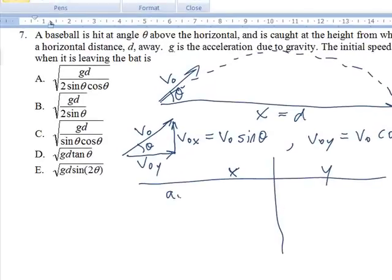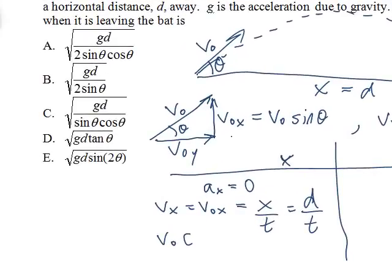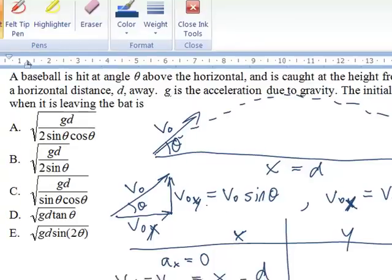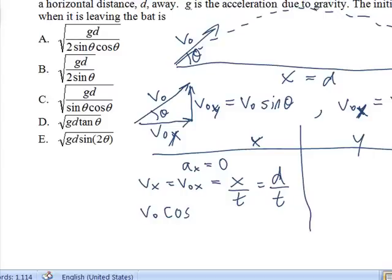So for x we know that the acceleration component is 0. So v sub x equals v sub 0x never changes. It's just equal to the x distance divided by the time, which in this case is d divided by the time. So we can say that v sub 0 times cos theta. Oops, darn it. This is v sub 0y and this is v sub 0x. So I made a mistake with the y component x component, but I don't feel like re-recording over it. So back on track now.